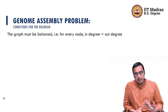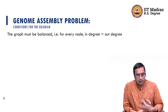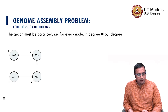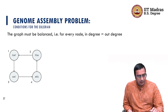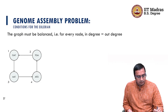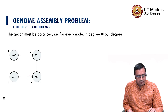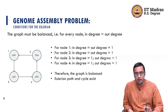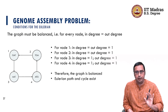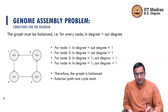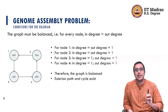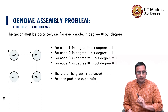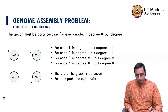Now let us look at another graph. Here we have 4 nodes again, and for node 3, in-degree equals out-degree equals 1. For node 4 also in-degree equals out-degree, and for all the nodes we have in-degree equal to out-degree equal to 1. Since every node has been verified as balanced, this graph is a balanced graph, and both an Eulerian path and Eulerian cycle exist — hence this graph is indeed Eulerian.